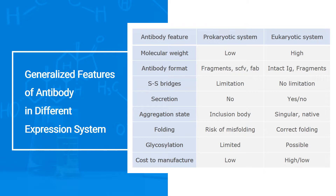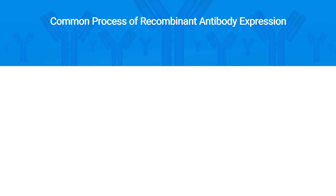Different antibody expression systems have different expression features, as listed in the table. In the common process of Recombinant Antibody Expression, it can be summarized into seven key steps.